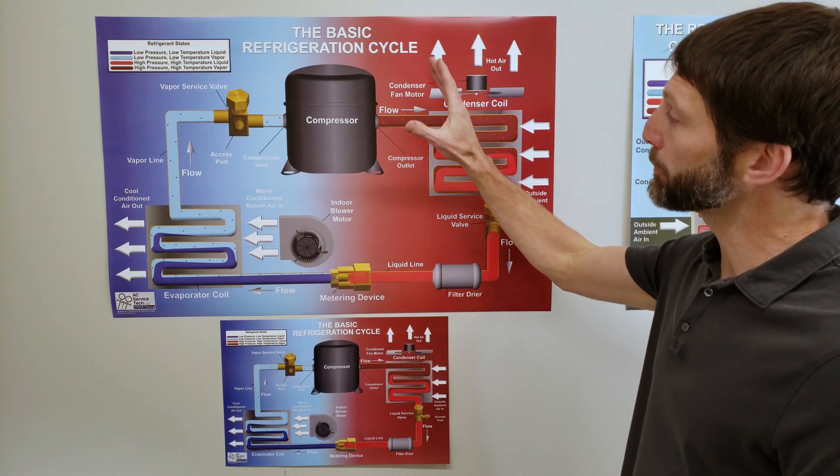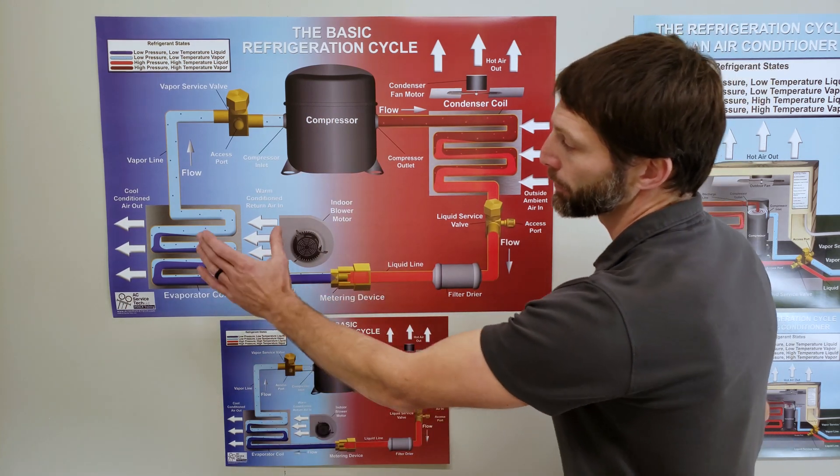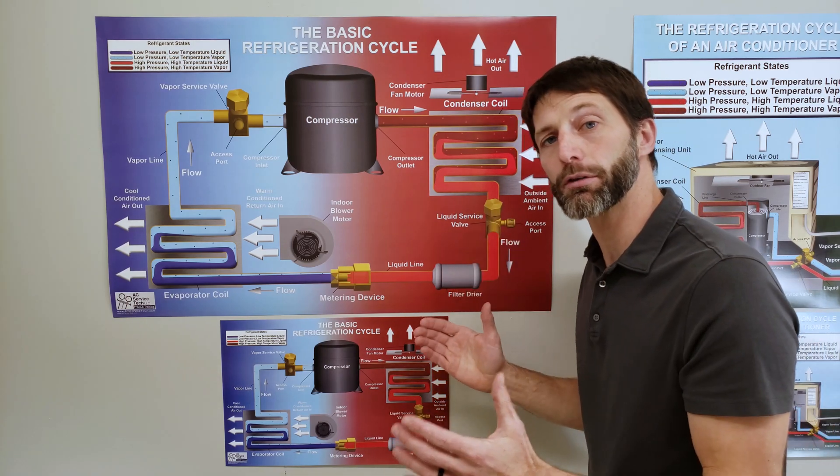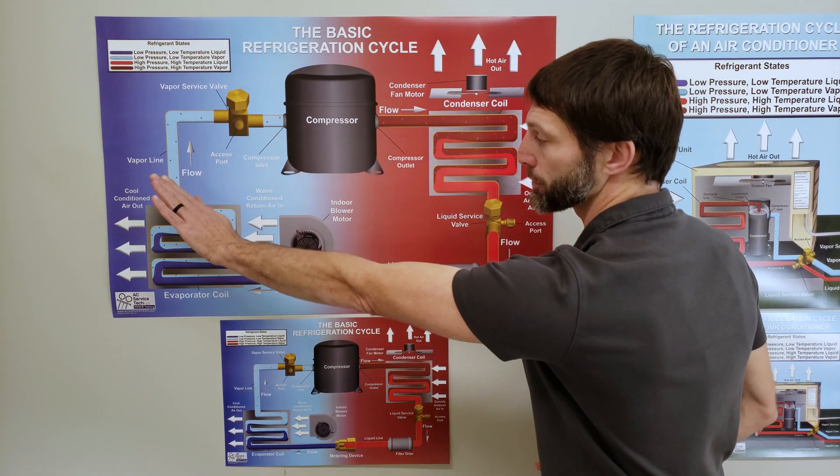This is the basic refrigeration cycle and here you have your compressor, your metering device, your evaporator coil, and your condenser coil. Those are the four main components to the refrigeration cycle and you have this split up between the high pressure side and the low pressure side.